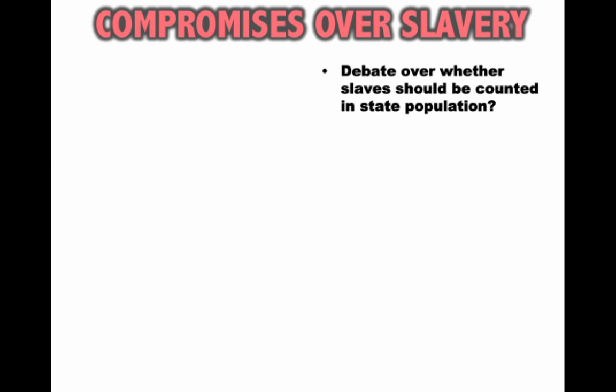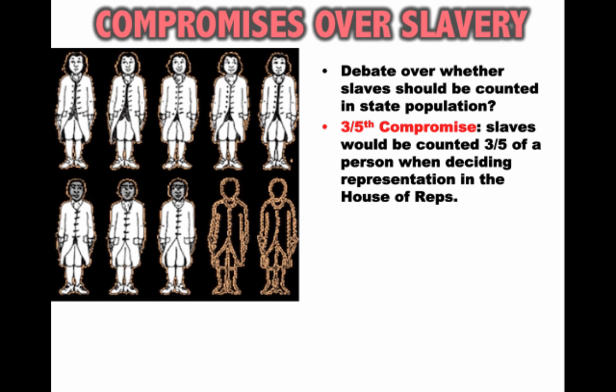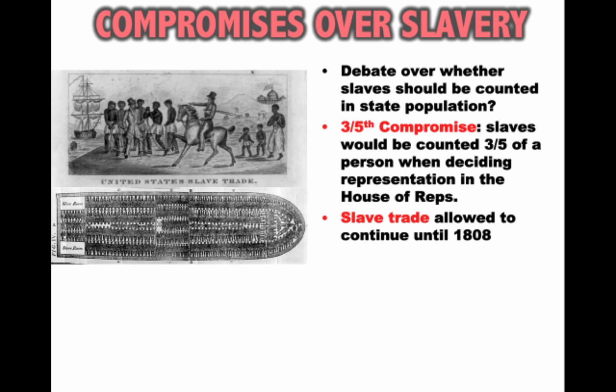While they solved the population issue, another issue hovered over the Constitutional Convention — slavery. There was a debate over whether slaves should be counted in the state population. Southerners said yes, to get more representatives; northerners said no, since slaves were given no political, social, or economic rights. They came up with a very controversial compromise called the Three-Fifths Compromise: slaves would be counted as three-fifths of a person when deciding representation in the House of Representatives, adding more representatives for southern states with large slave populations.